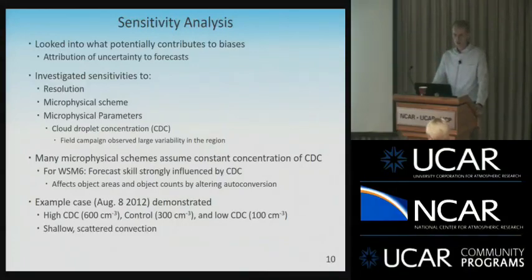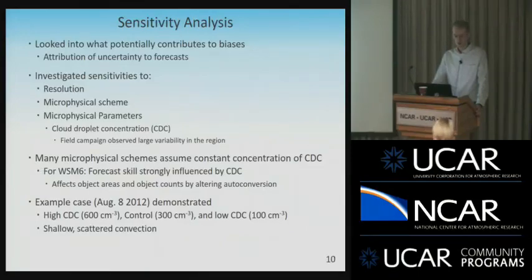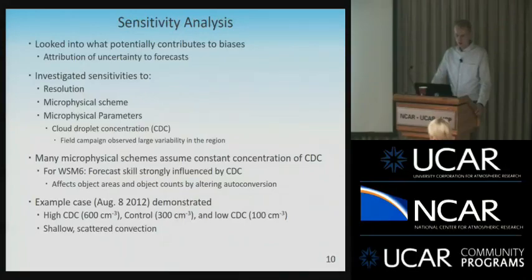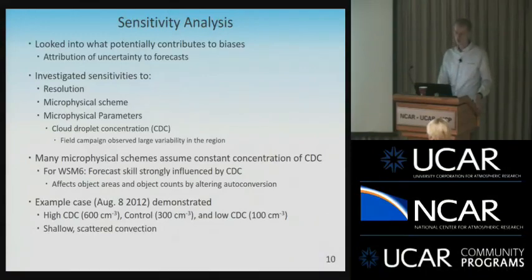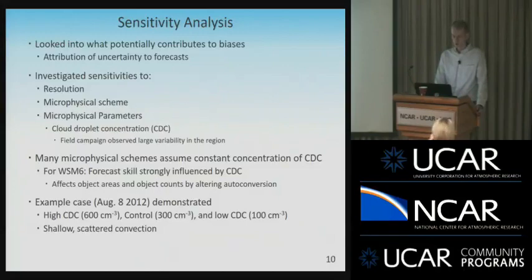We looked at different resolutions — 9 km, 3 km, 1 km, and 333 meters — and microphysical schemes, going from WSM6 as our control to the Thompson scheme. For microphysical parameters, we ended up focusing on cloud droplet concentration, because the field campaign in eastern North Dakota focused on very shallow convection, and we had lots of observations such as cloud droplet concentrations, CCN, and aerosol particles. Generally, bulk single-moment microphysical schemes assume a constant cloud droplet concentration — typically 100 for maritime, 300 for continental — but we observed huge variability going up to even 1,000 or 1,200.